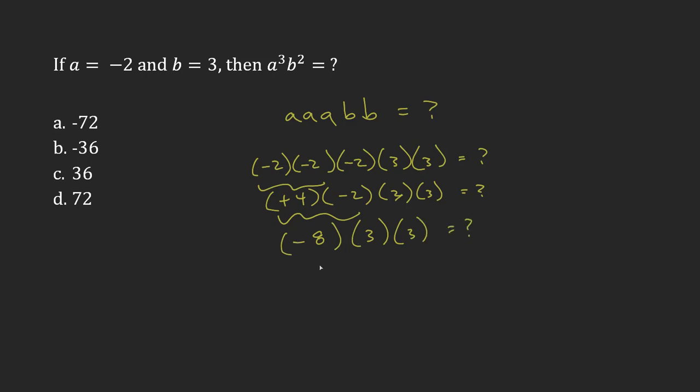Now I have negative 8 times 3. That's a negative times a positive. Negative times a positive gives me a negative. And so 8 times 3 is 24.